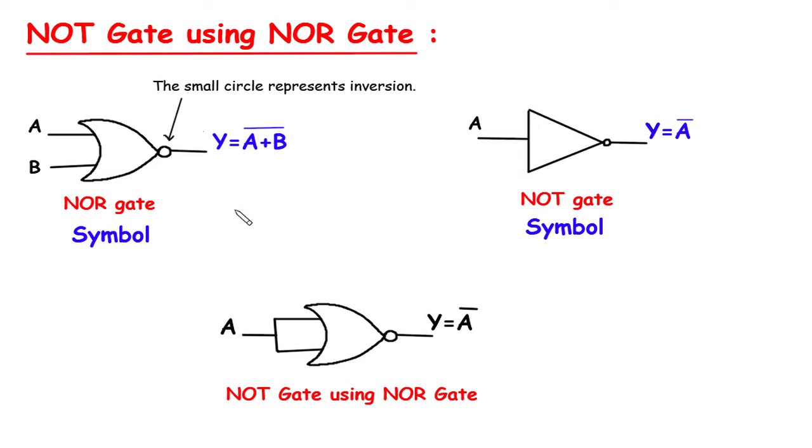Now we have to make NOT gate using this NOR gate. So what we will do? We will merge this input and consider it as one input. Then we get the output as Y equals A bar.